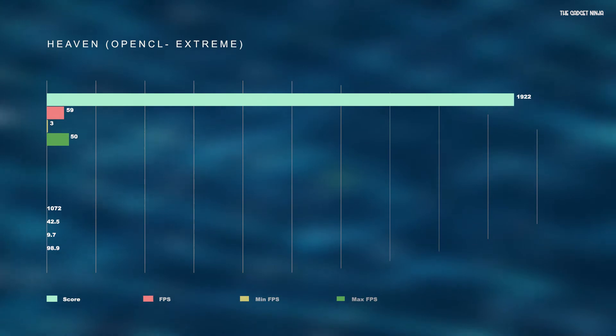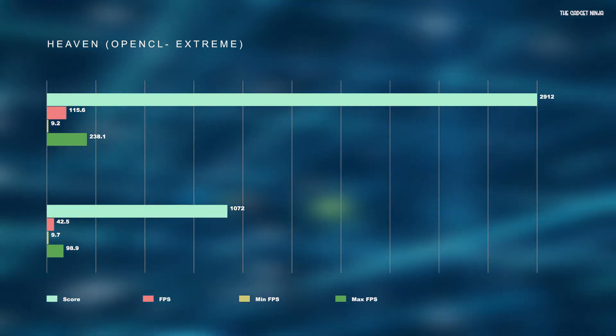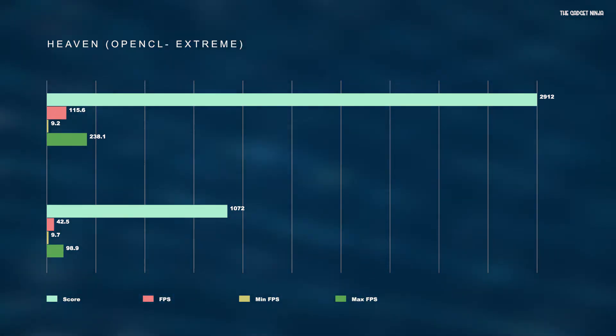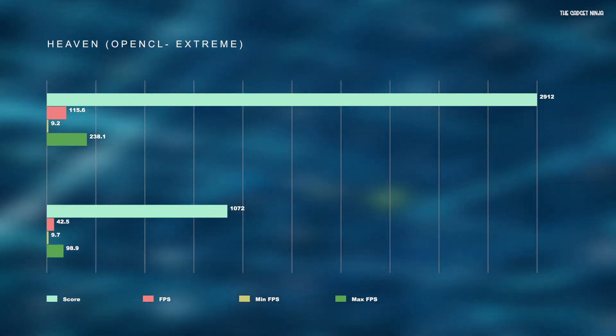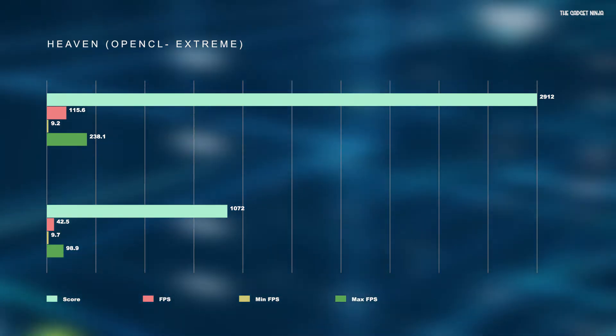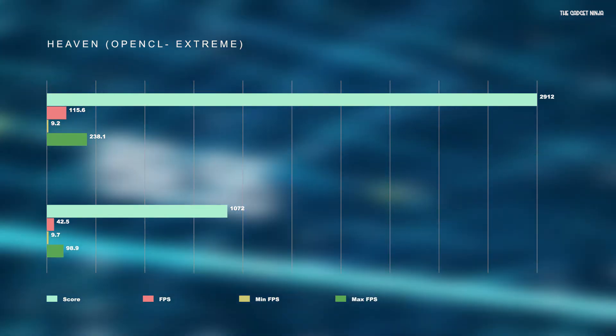Next up I ran Heaven on OpenCL with all settings at either High or Ultra, and the Windows machine won by a huge margin. The Windows machine scored 2912 with an average FPS of 115.6, the minimum being 9.2 and the maximum being 238.1, whereas the Hackintosh scored 1072 with an average FPS of 42.5, the minimum being 9.7 and the maximum 98.9. That's a huge gap.